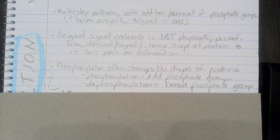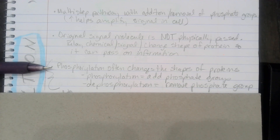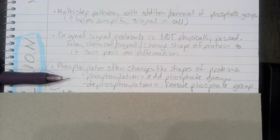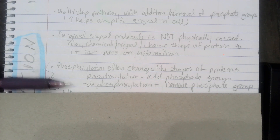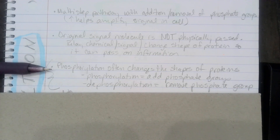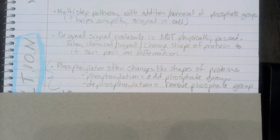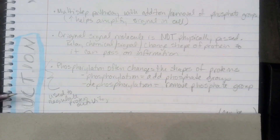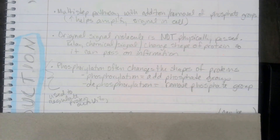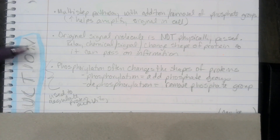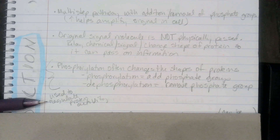Phosphorylation often changes the shape of proteins. Phosphorylation means to add phosphate groups; dephosphorylation means to remove a phosphate group. This process of either adding or removing phosphate groups is used to regulate protein activity.